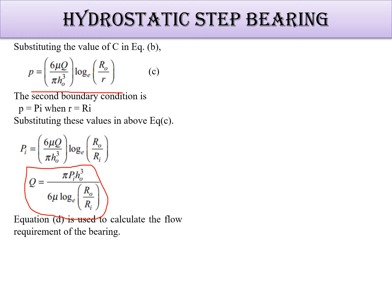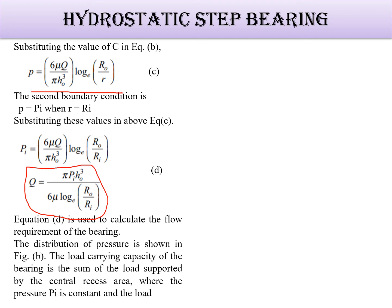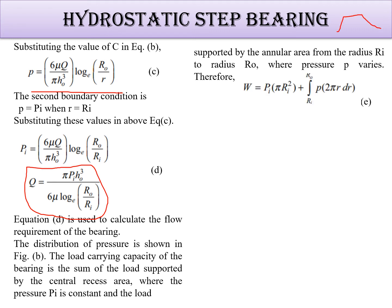For hydrostatic step bearing. Now the distribution of pressure is shown in figure b, which we have seen in this way. So that is Ri. We have seen that for the thrust load W, we will find out Pi into πRi² plus integration of Ri to Ro into p to πr dr.